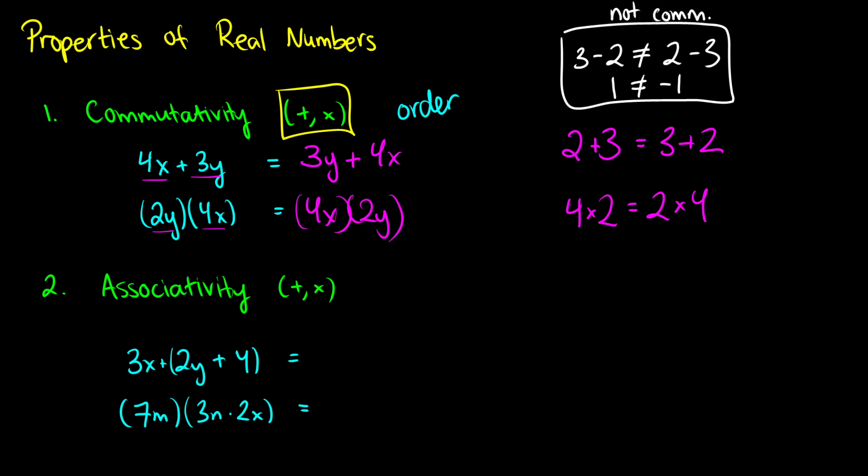That's commutativity. With set theory, you'll find that if you have A union B, you'll also have B union A — so that's another example of commutativity that you will eventually encounter if you continue in math.